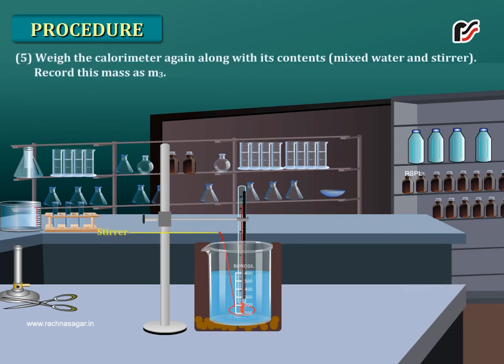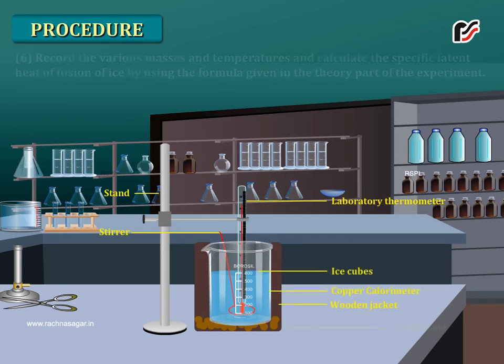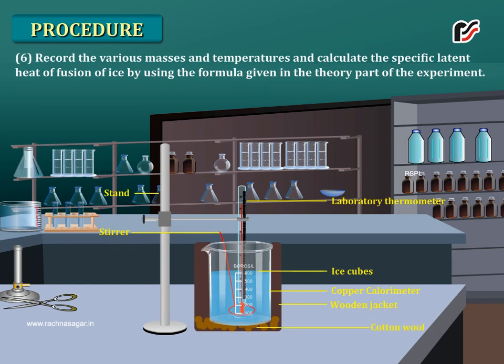Weigh the calorimeter again along with its contents, mixed water and stirrer. Record this mass as M3. Record the various masses and temperatures and calculate the specific latent heat of fusion of ice using the formula given in the theory part.